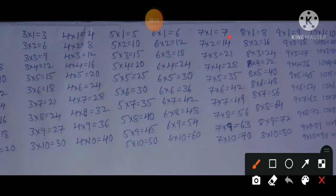Coming to the 7 times table. We already learned up to 7×6=42 in previous tables. So if we know the 6 times table perfectly, we have to learn only four lines to complete the 7 times table: 7×7=49, 7×8=56 and 8×7=56, 7×9=63 and 9×7=63.